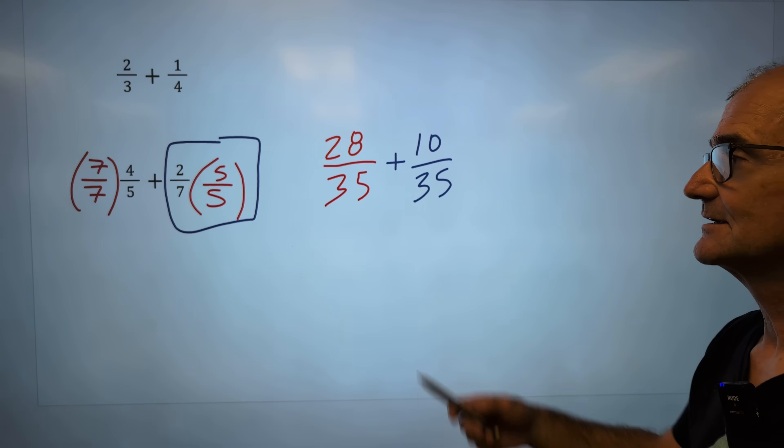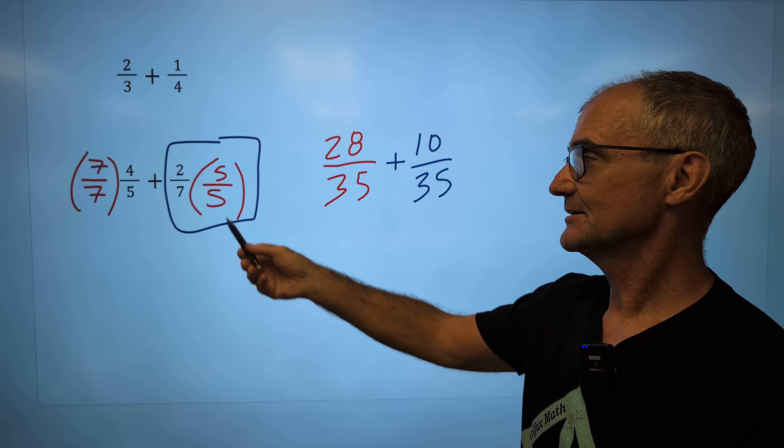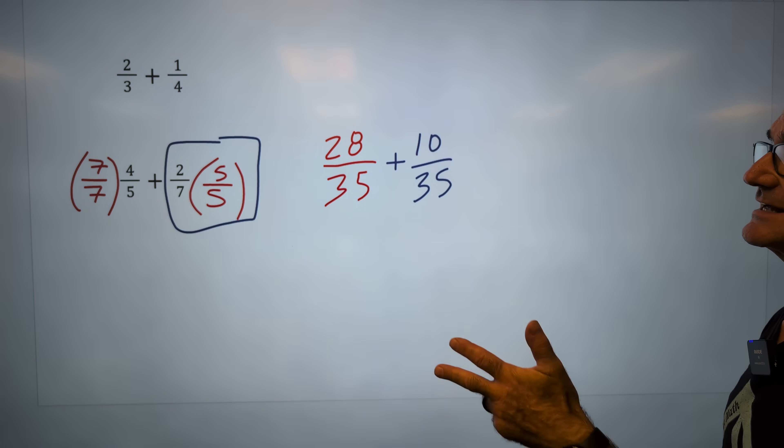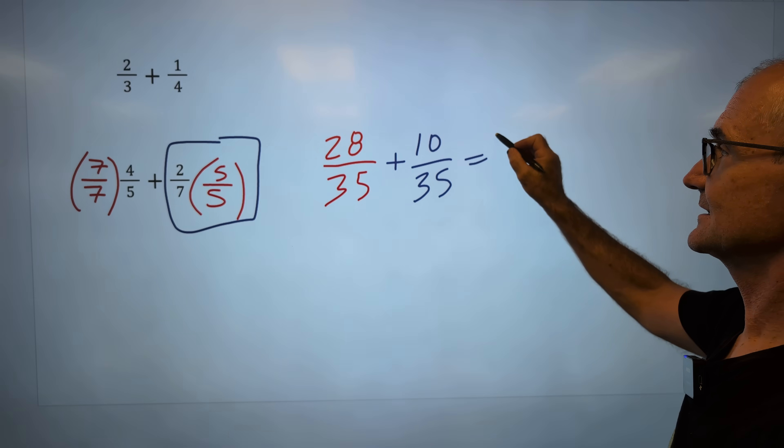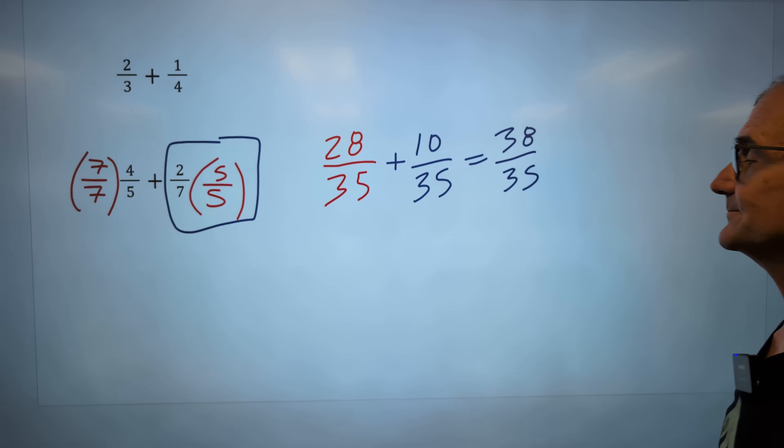It's been multiplied by a factor of one to get that common denominator. Step one, find that least common denominator, thirty-five. Find the equivalent fractions, twenty-eight thirty-fifths plus ten thirty-fifths. Step three, add across the top, thirty-eight. Keep the bottom the same.